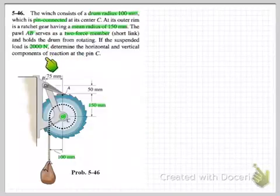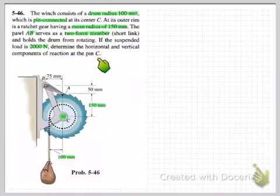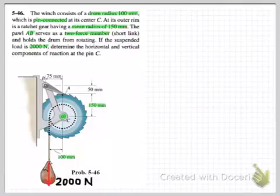And we're told that our load down here in this case is 2000N. And we're asked to determine the horizontal and vertical components of the reaction force at the pin C. So we want to know what the forces are here. Okay so let's draw on our load on the diagram.